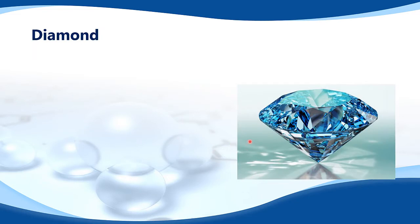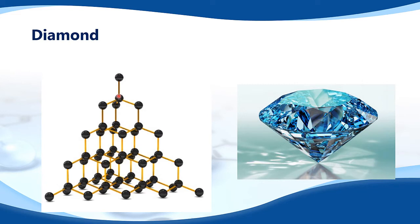Next is diamond. Diamond has a giant covalent structure made up of carbon, where each carbon is joined to four other carbons. The bond angle between the carbons is 109.5 degrees. Because of these strong covalent bonds between atoms, diamond has a very high melting point and a very high boiling point. It also means that diamond is very hard.